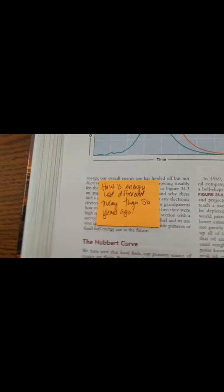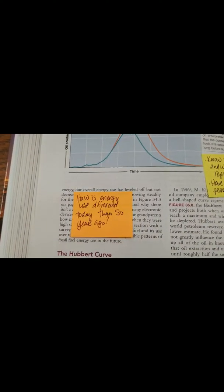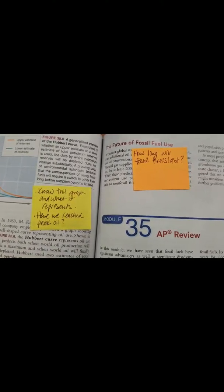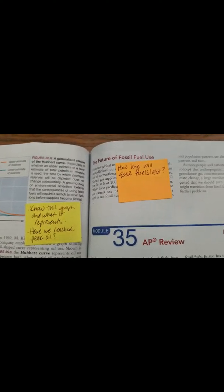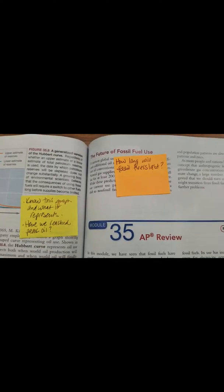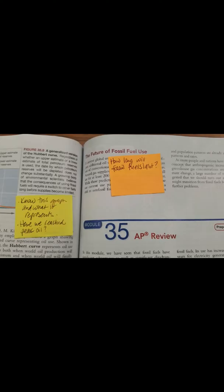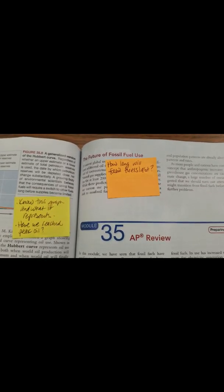Down here it says, how is energy use different today than it was 50 years ago? Kind of mentioned that with your grandparents and energy use. And then the last thing over here, fossil fuel use, it's finite. We don't have an infinite amount. So how long will it last? At current rates, assuming that we don't increase our use and we don't decrease drastically, how long do we have? Think about the three fossil fuels, coal, natural gas, and petroleum. How long will each last? And that's module 35.